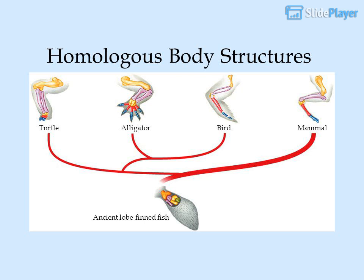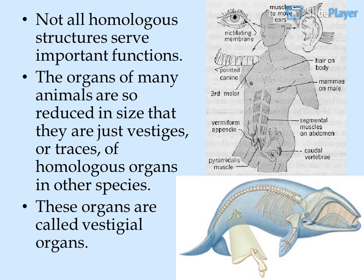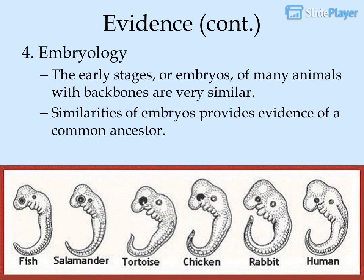Homologous body structures are seen across the turtle, alligator, bird, mammal, and ancient lobe-finned fish. Not all homologous structures serve important functions — the organs of many animals are so reduced in size that they are just vestiges, or traces, of homologous organs in other species. These organs are called vestigial organs.